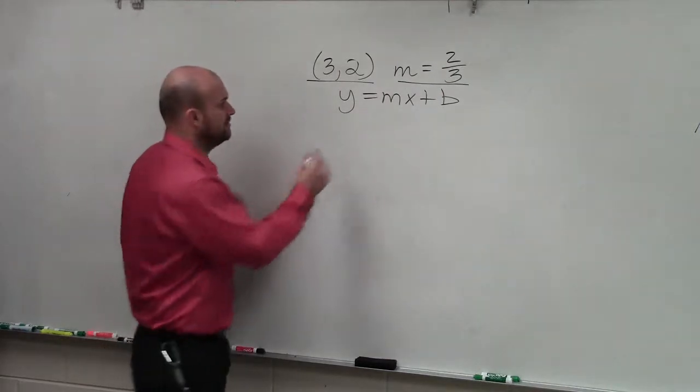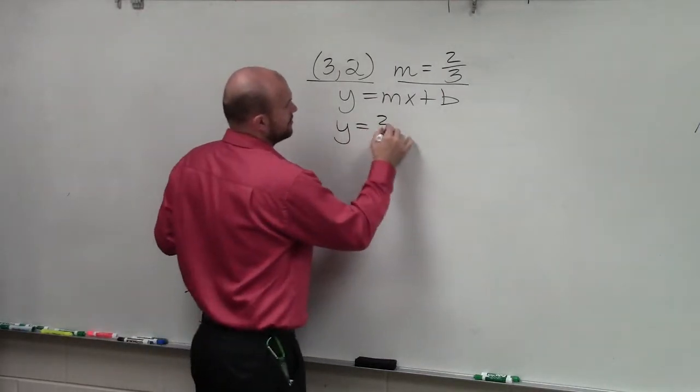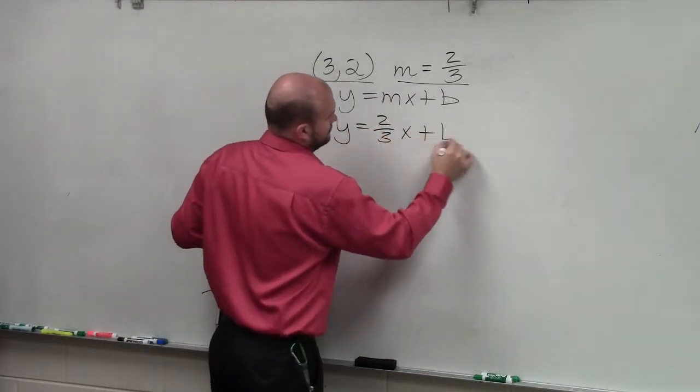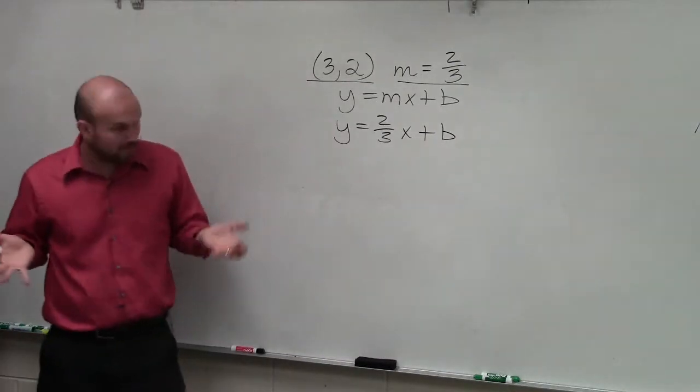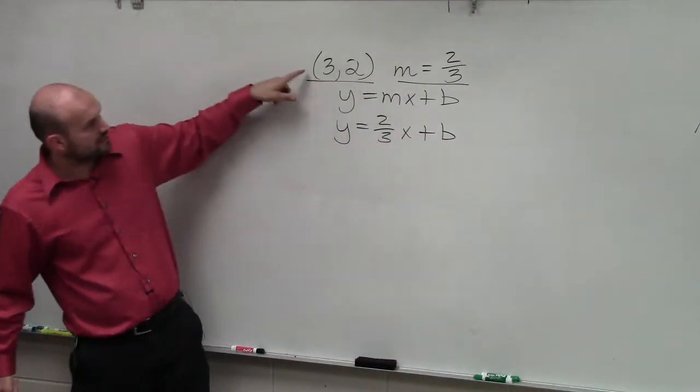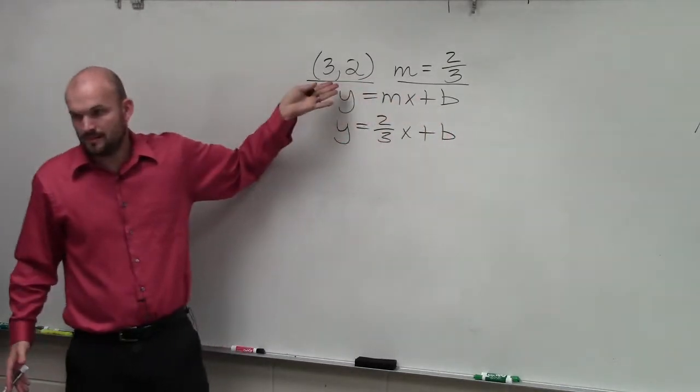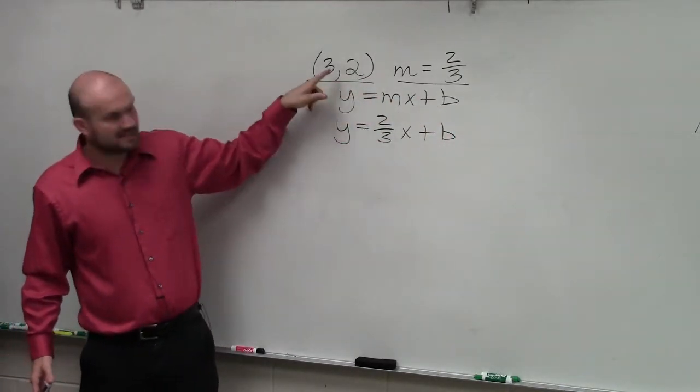This says m is equal to 2 thirds. So the first thing I do is write in the slope. But to write an equation in slope-intercept form, we've got to find the value of b. So does our original problem tell us what b is? No.